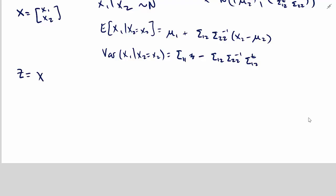And what she said was, define z equal to x1 plus ax2, where a is equal to negative sigma 1 2, sigma 2 2 inverse.